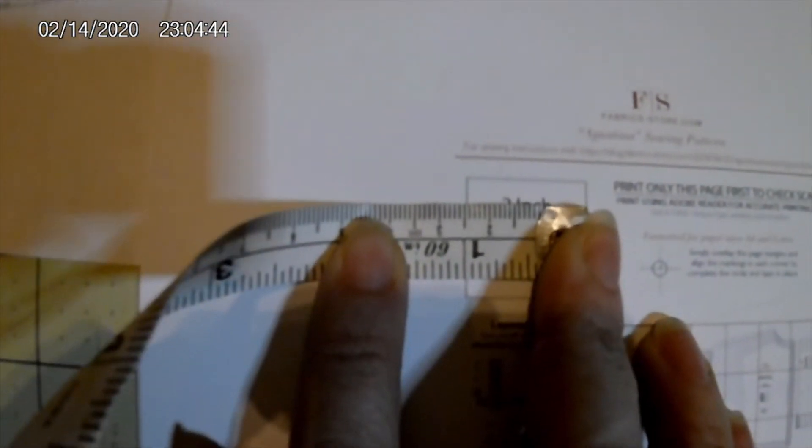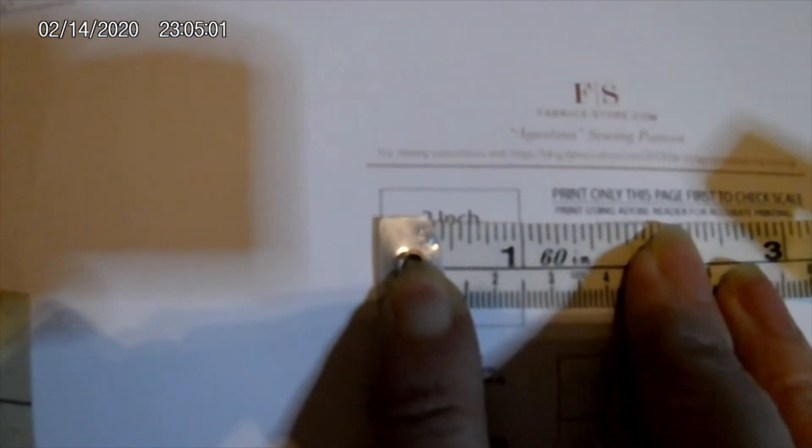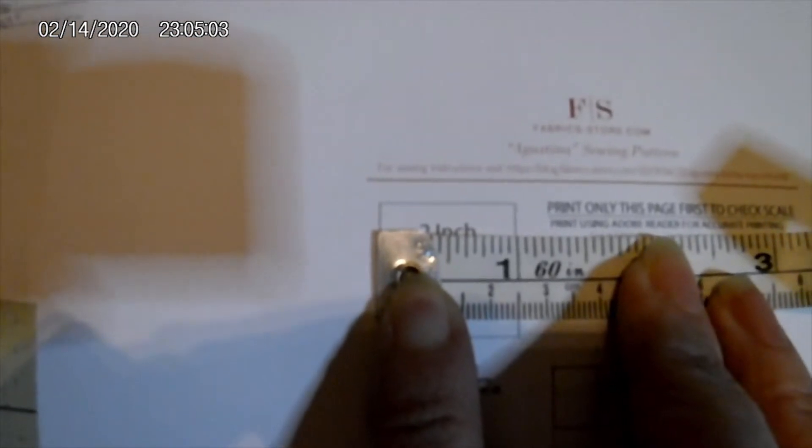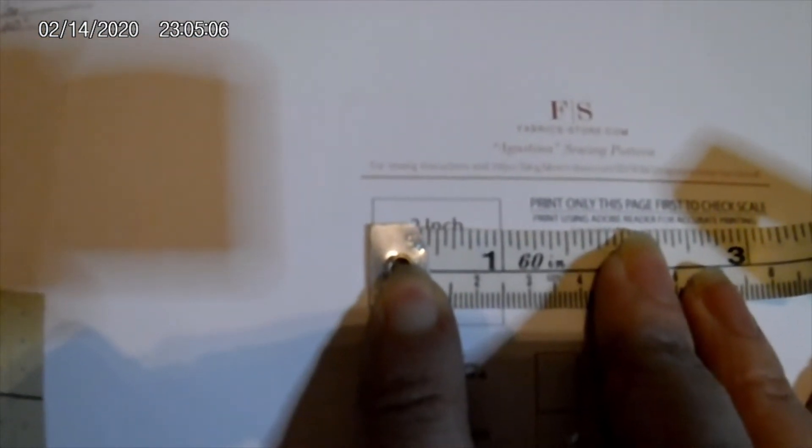Let me grab my handy dandy tape measure. If I get nice and close here you will see that that is indeed one inch. This is an interesting tape measure in that it has centimeters as well. So for those of you tuning in from across the pond, one inch is equal to 2.5 centimeters. So this means that my printer is accurate.